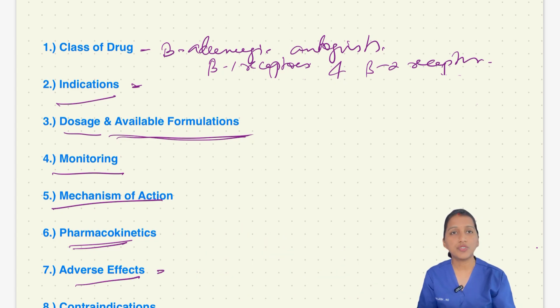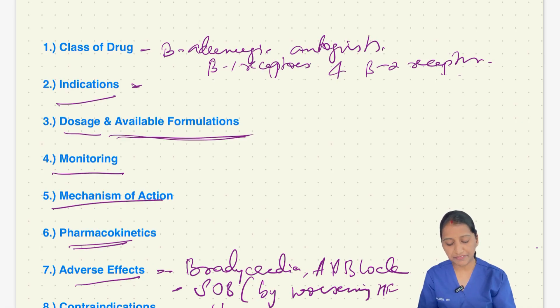Next, coming to adverse effects. The most common adverse effects is bradycardia, AV block which may manifest as chest pain, palpitation, breathing difficulty. Patient may have shortness of breath which could be by worsening of the heart failure. Other adverse effects are hypotension, glucose intolerance and metaprolol masks hypoglycemia in patient with diabetes.